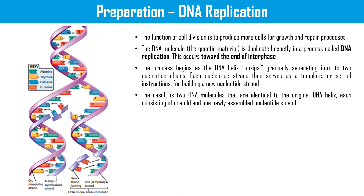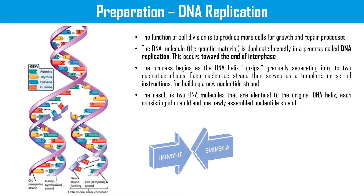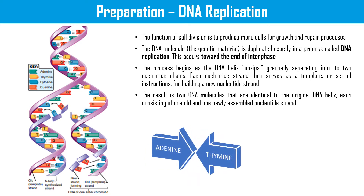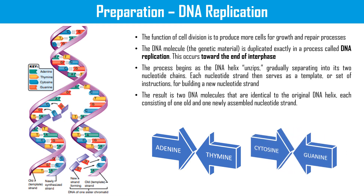The result is two DNA molecules that are identical to the original DNA helix, each consisting of one old and one newly assembled nucleotide strand. As we know, the pairing of nucleotides in DNA follows the rule that adenine always pairs with thymine, and guanine always pairs with cytosine — abbreviated as ATCG to remember the pairing.